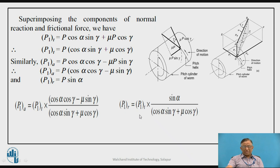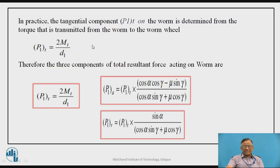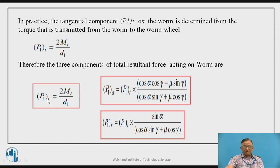In practice, the tangential component P1T is the useful force that transmits torque. It is calculated as P1T = 2MT/D1, where MT is the torque and D1 is the pitch diameter of the worm. Once P1T is known, P1A and P1R can be calculated using the expressions involving pressure angle α, lead angle γ, and coefficient of friction μ.